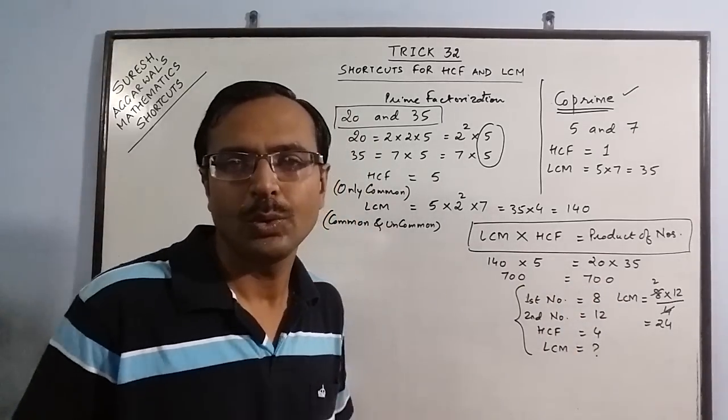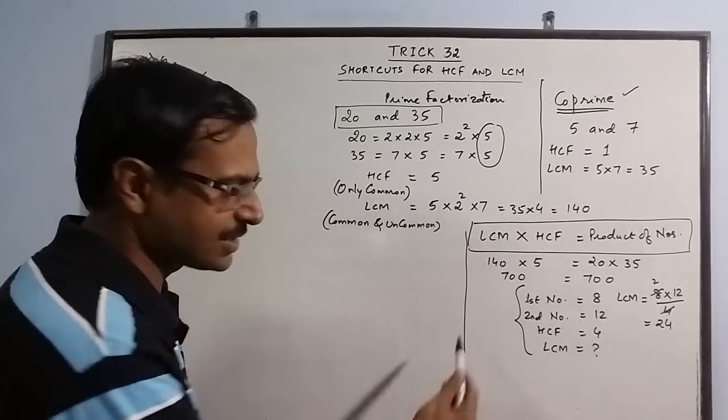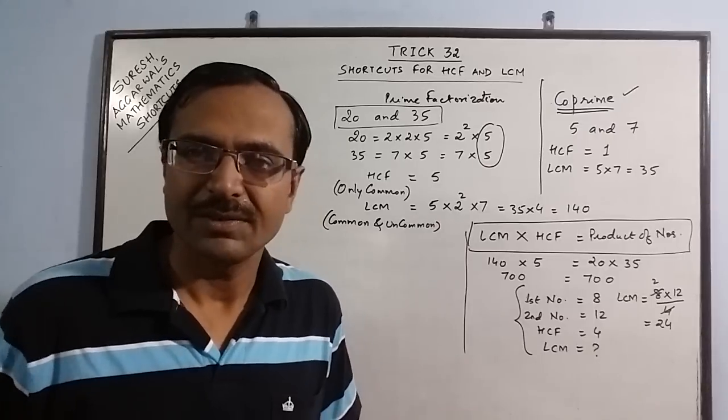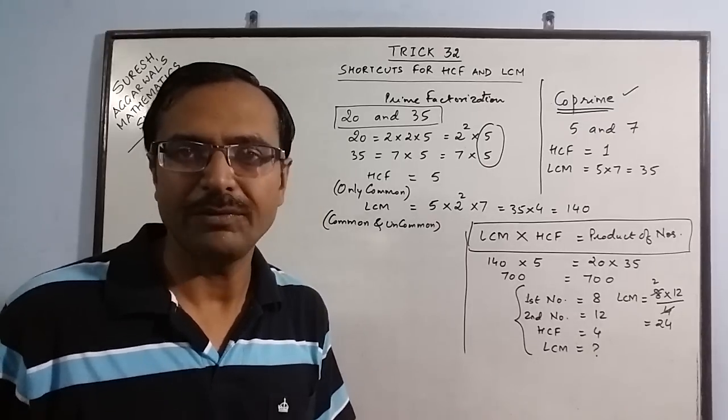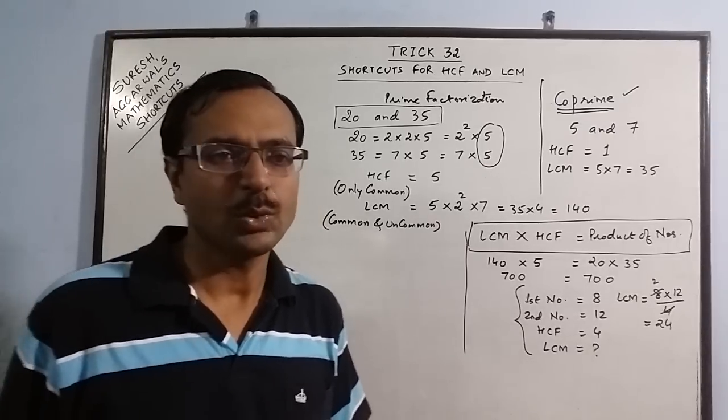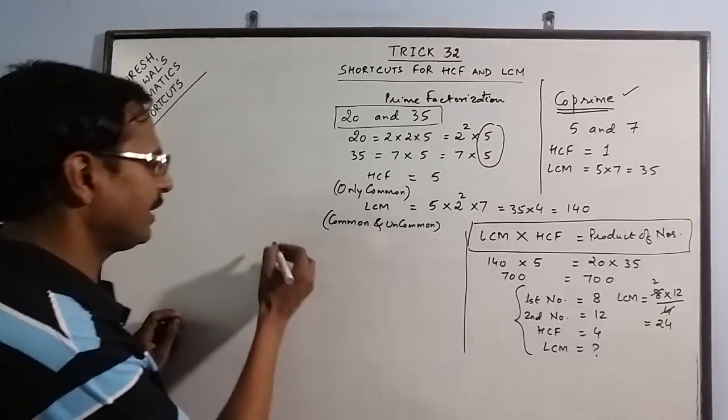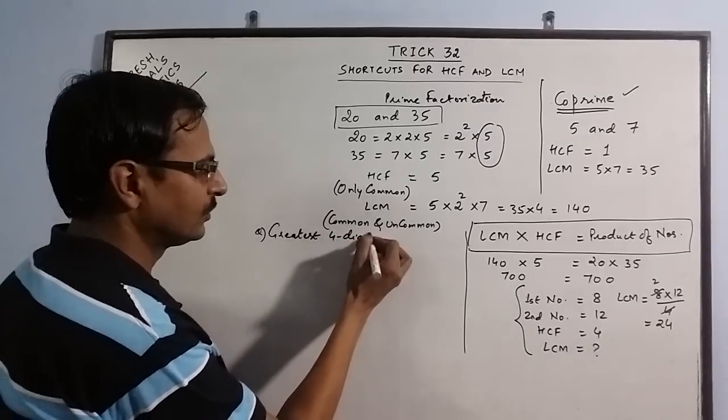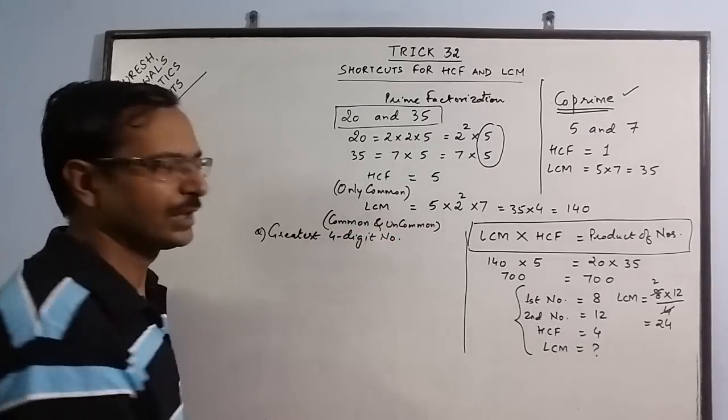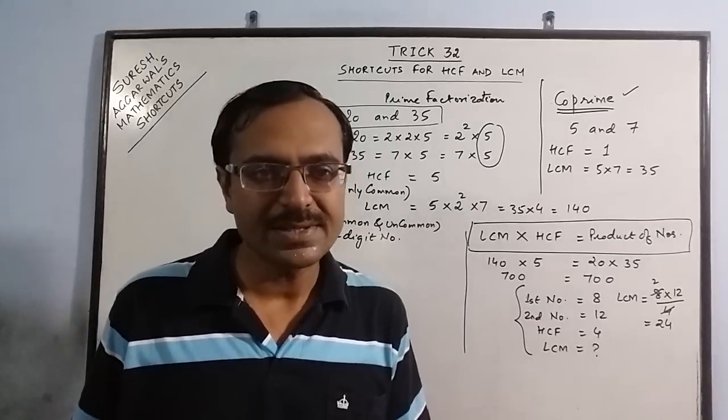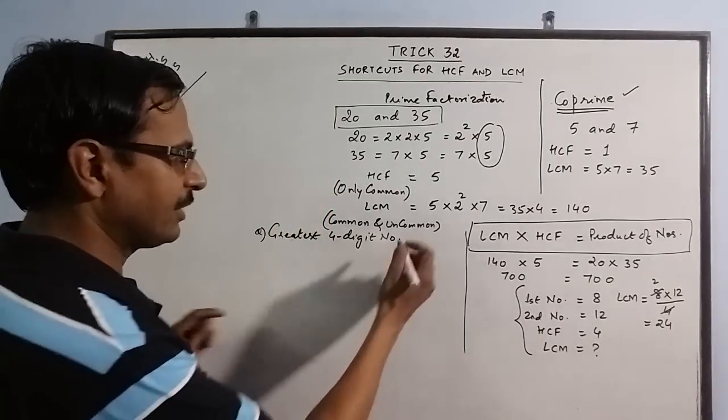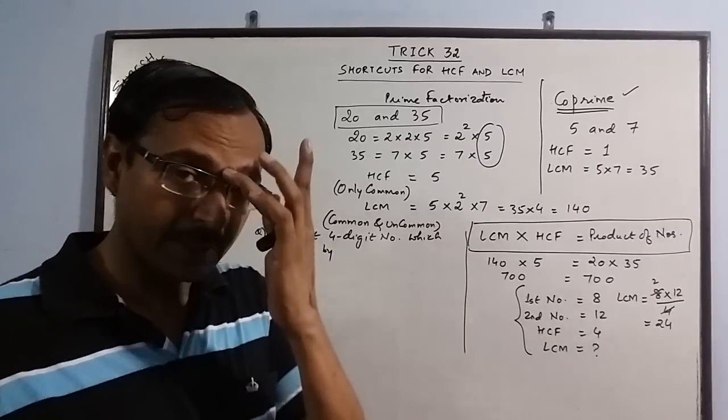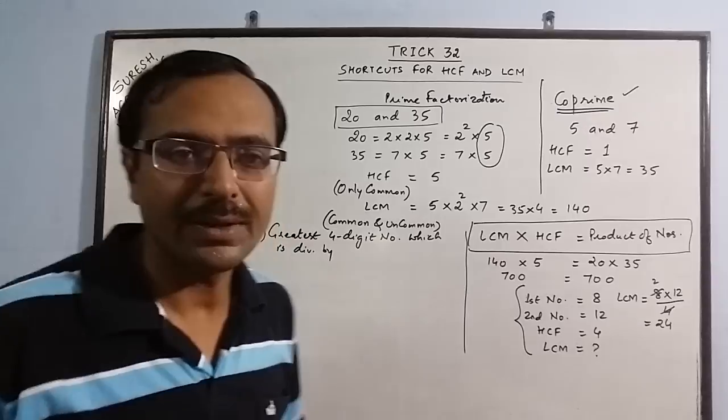Now let us come to another very important problem which is asked in competitive exams. So I am taking one example of that problem because it is very easier to understand the steps when we have one example. So let us have this question. We have to find the greatest 4 digit number which is divisible by 3 given numbers, say we have 12, 20 and 32.